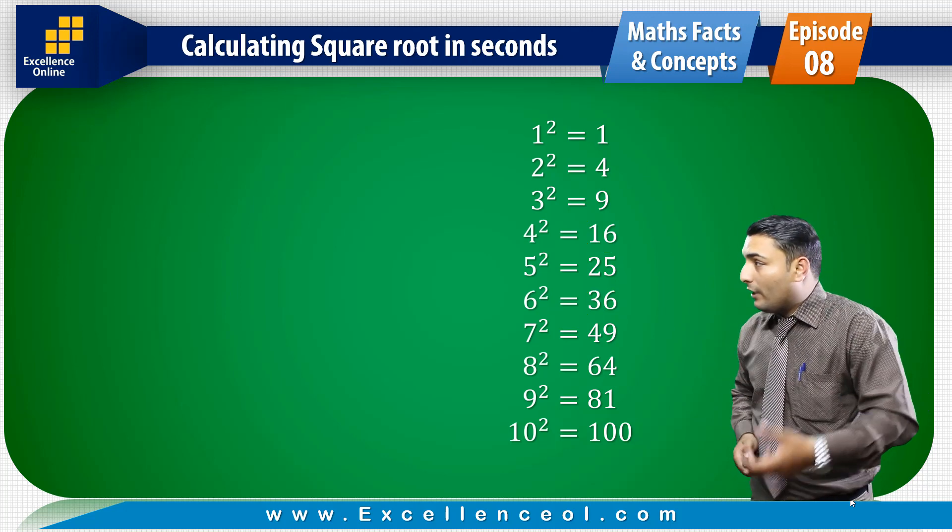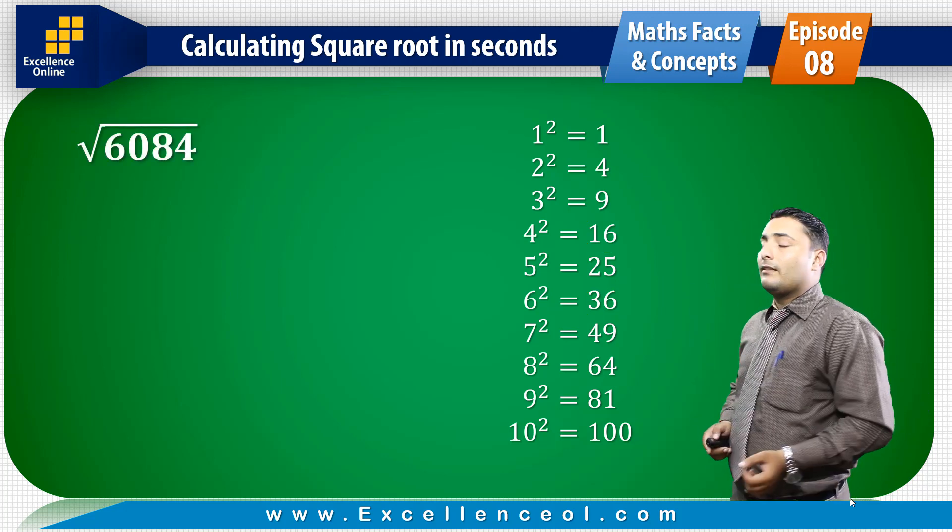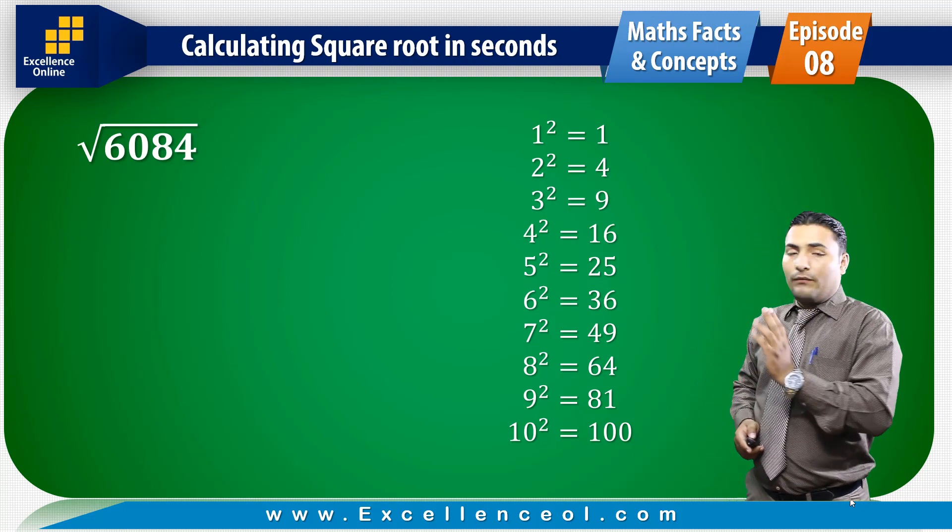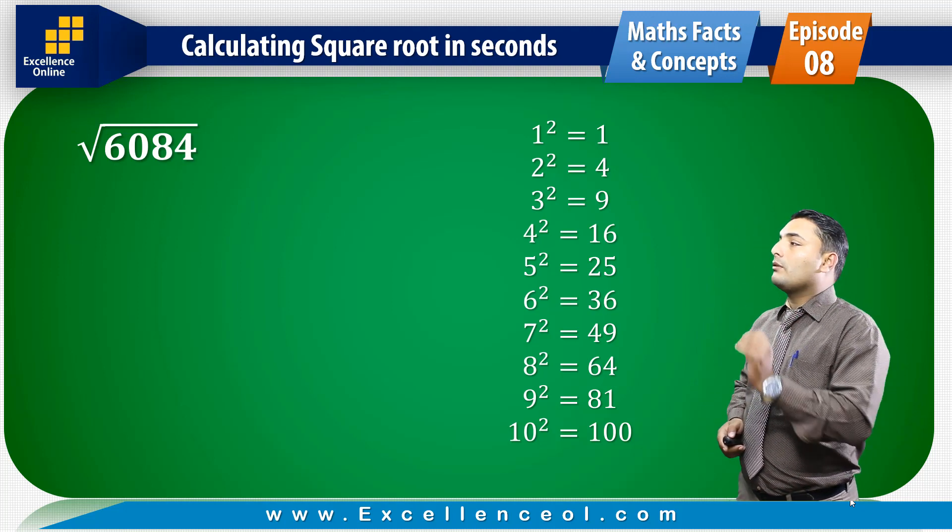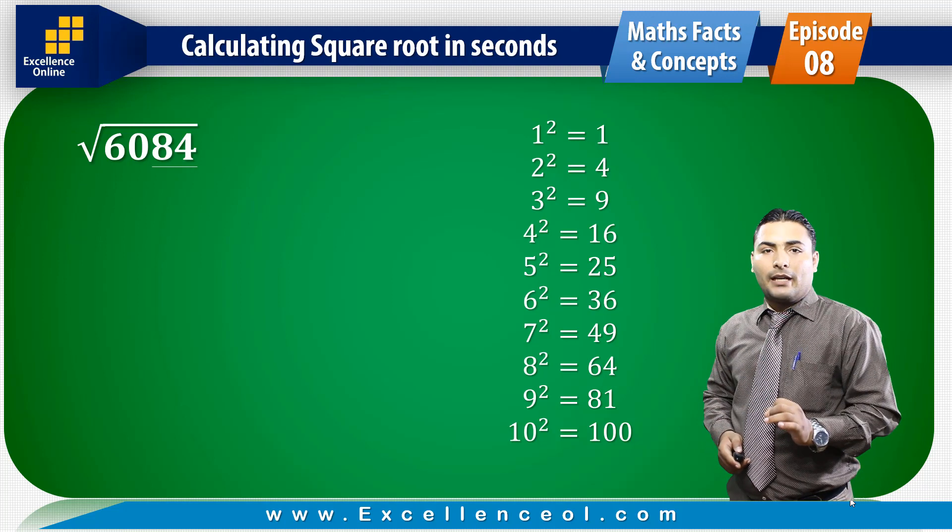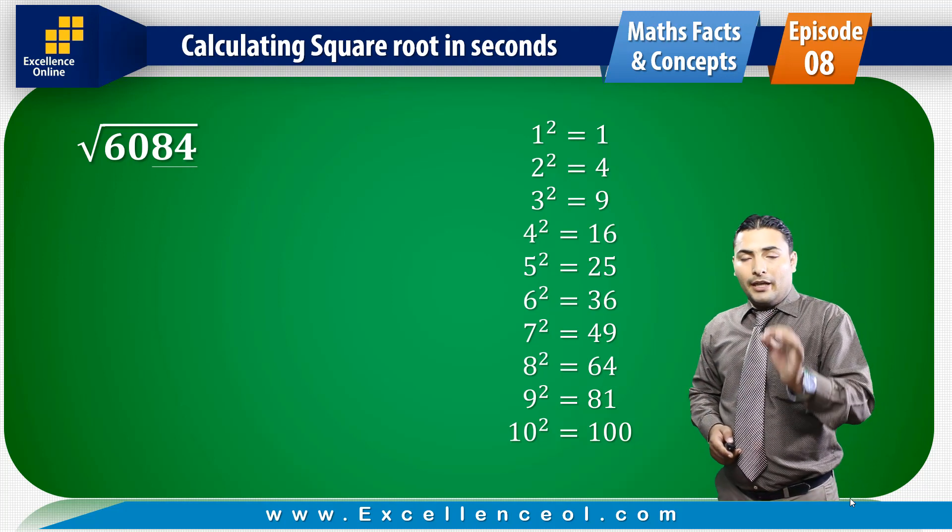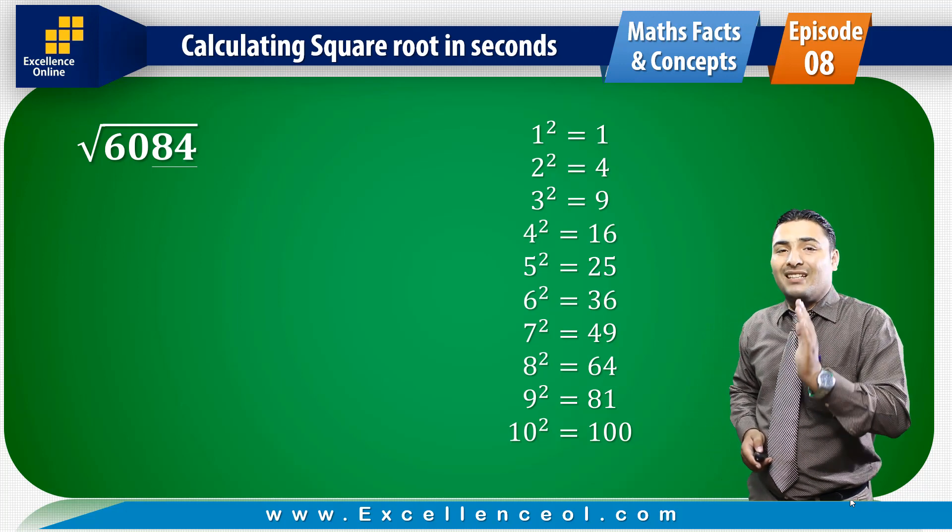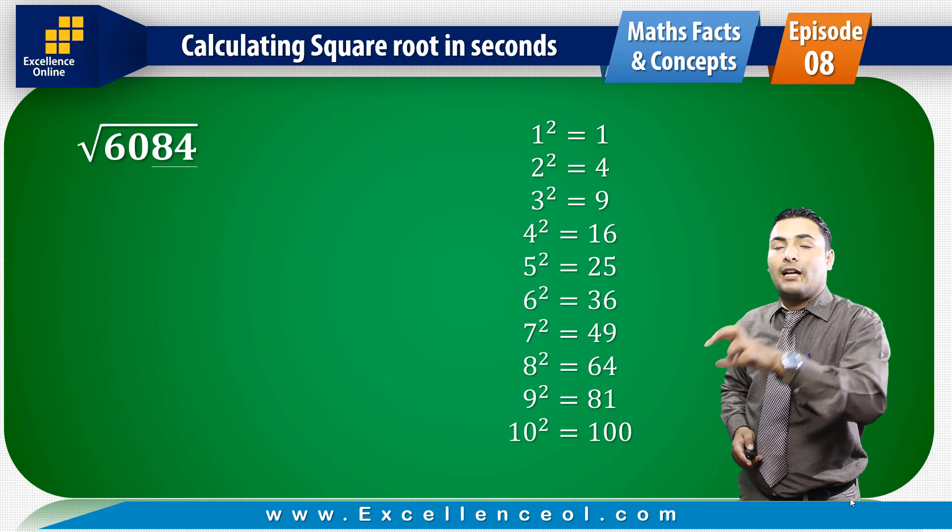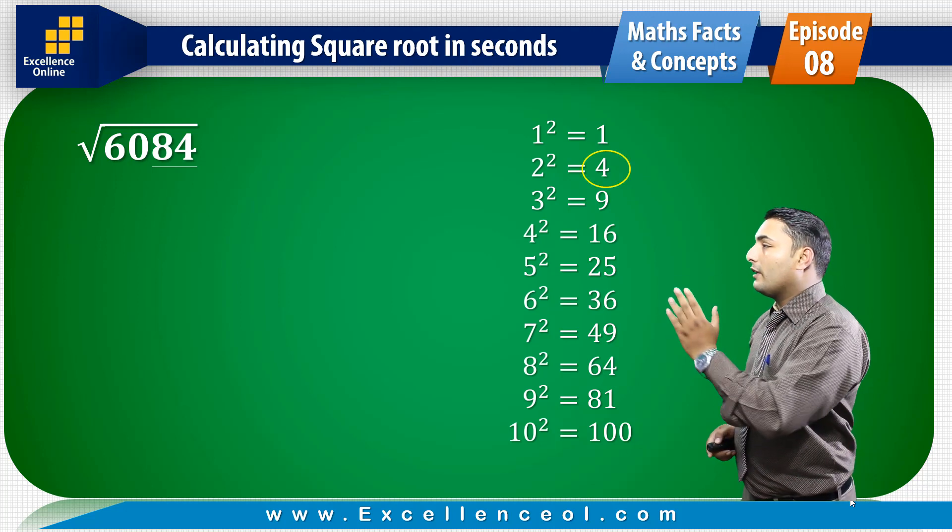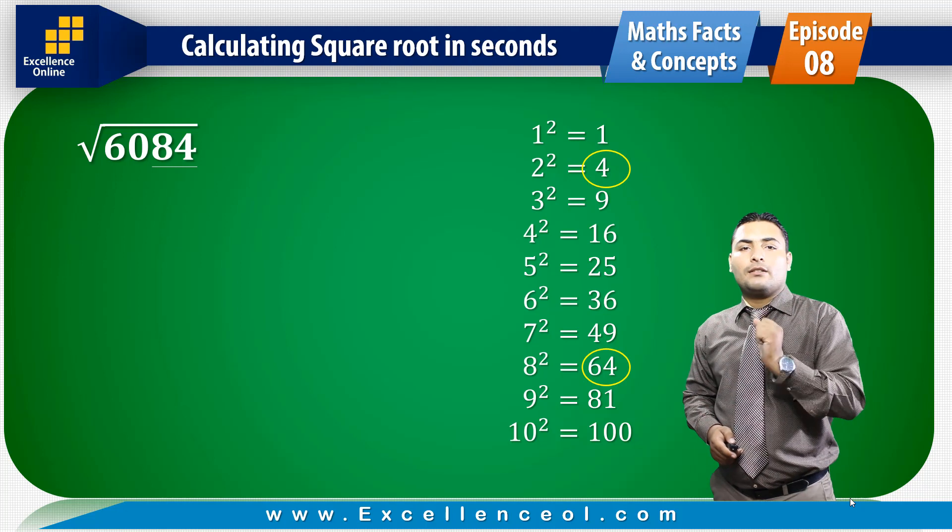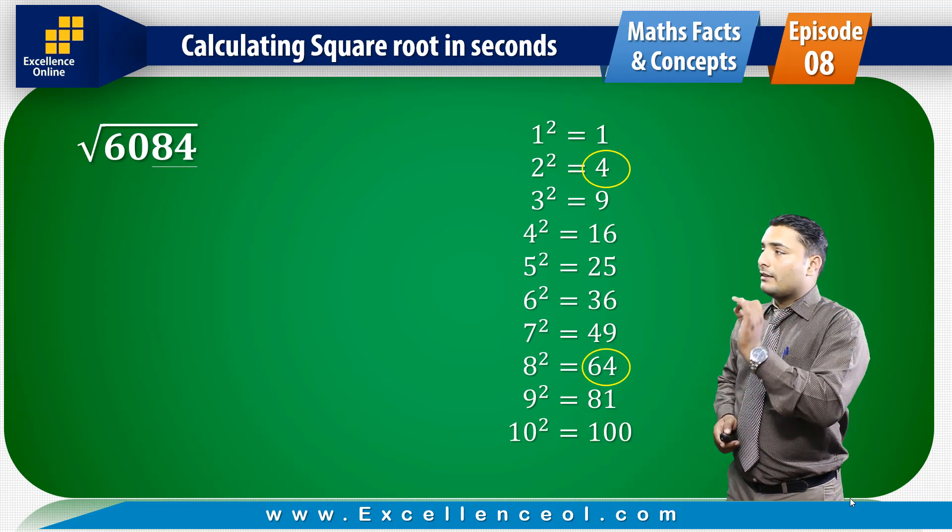Another example: suppose 6084. When you want to take the square root, if you make the last pair it is 84. The last digit is 4.